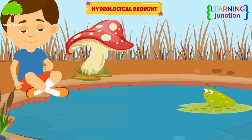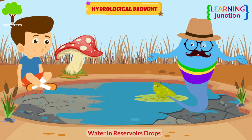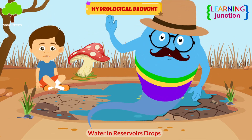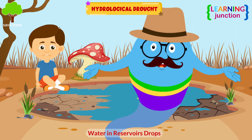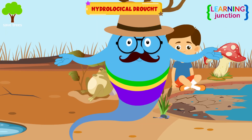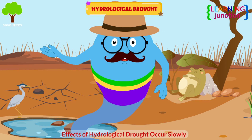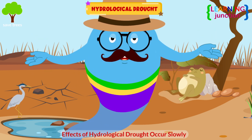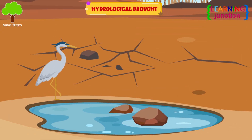Hydrological drought happens when the water in reserves like aquifers, lakes, and reservoirs drops below their normal amount. You see the effects of hydrological drought more slowly because it involves stored water that is used or moved but not refilled.